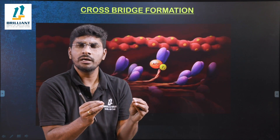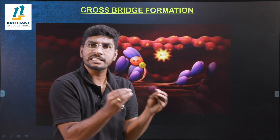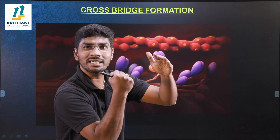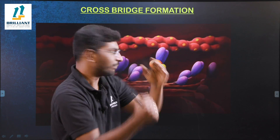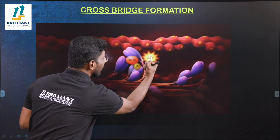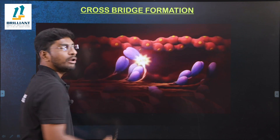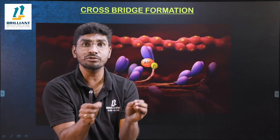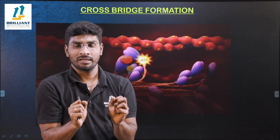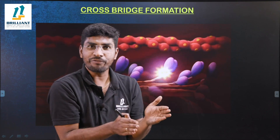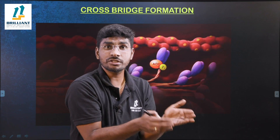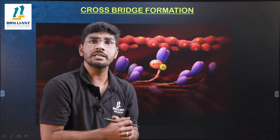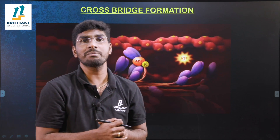This cross-bridge formation is one important step in the sliding filament theory, which will be explained in the next video. Remember: myosin is the thick filament; it takes one ATP, lifts up, attaches to actin, and pulls it toward the center of the A band — that process is called the power stroke and cross-bridge formation. So far we have understood the actin filament structure and the myosin filament structure; in the next video we will understand the complete myofibril structure.